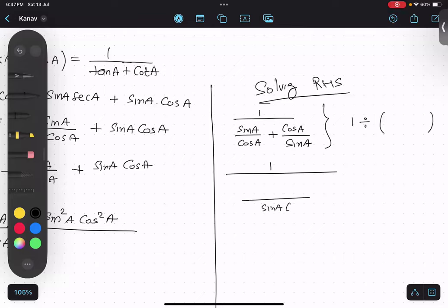Sin A cos A, so I will be getting sin square A plus cos A. Make sense? So one.